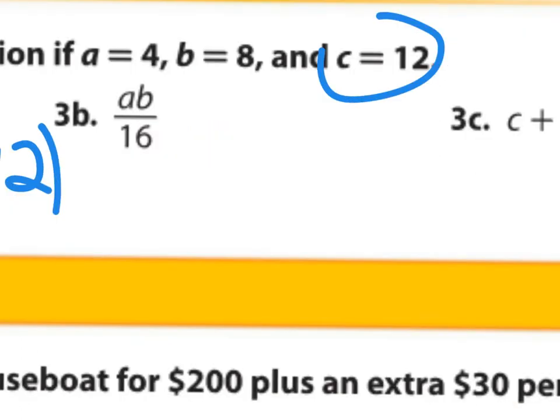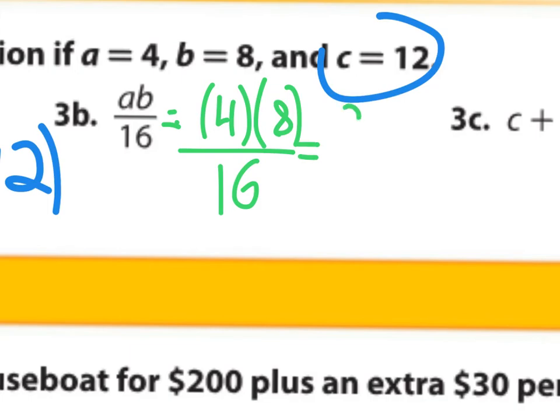3b. Let's replace the variables first where we have a is 4 and b is 8. So it's 4 times 8 over 16. 4 times 8 is 32 over 16. And now we have a division problem. 32 divided by 16 is just simply 2.